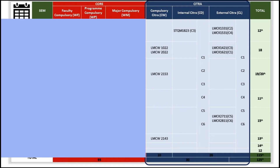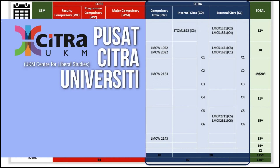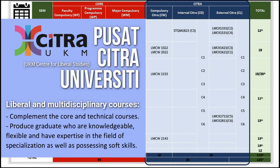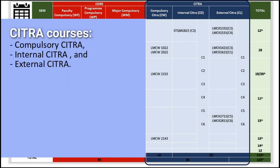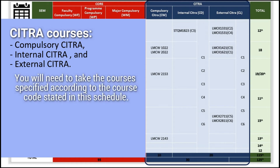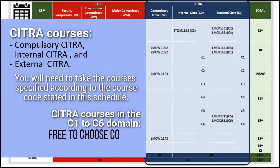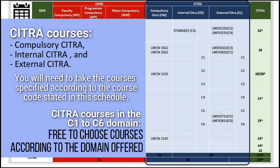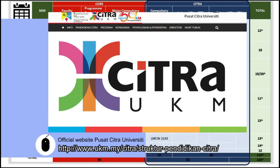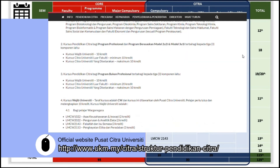Next are liberal and multidisciplinary courses called Citra, offered under Pusat Citra University. These courses complement the core and technical courses in order to produce graduates who are knowledgeable, flexible, and have expertise in a field of specialisation, as well as possessing soft skills. These courses are divided into Compulsory Citra, Internal Citra, and External Citra. You will need to take courses specified according to the course code in this schedule. For Citra courses in the C1 to C6 domain, you are free to choose courses that are beneficial to you. Please refer to Pusat Citra University to find out the available courses and minimum credits for each domain.